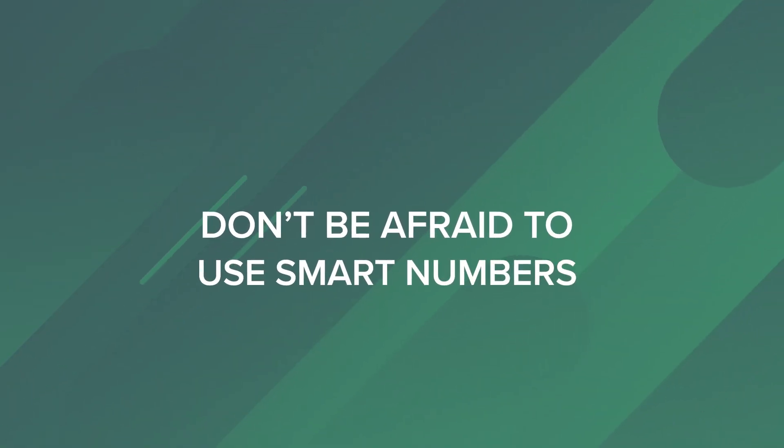Tip number one: don't be afraid to use smart numbers. I love this with percents, fractions, and sometimes ratios. If you're given a percent question where you have to do some percent increases or percent decreases, you can always start with a smart number — usually that number is going to be 100. If you're doing something similar with fractions, use a smart number that is divisible by the denominators in your fraction.